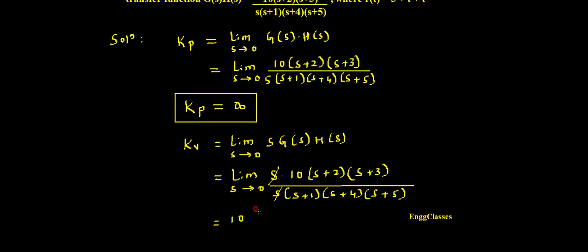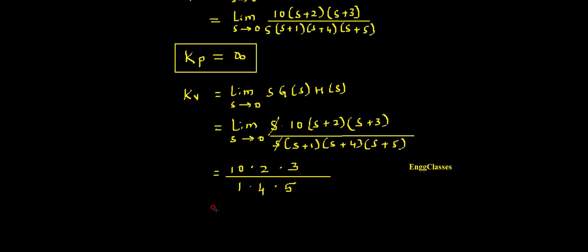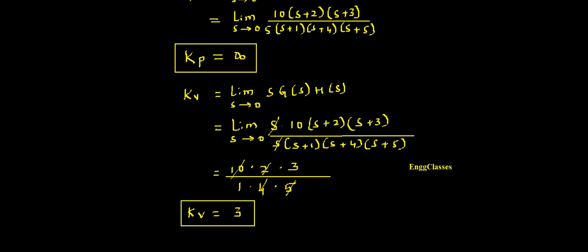With s=0: numerator gives 10 × 2 × 3 = 60 ... actually 10 × 2 = 20, and denominator gives 4 × 5 = 20. So we get 10 × 2 × 3 divided by 1 × 4 × 5. That is 10 × 2 = 20, divided by 20, multiplied by 3. Ultimately I get Kv = 3. So the velocity error constant Kv equals 3.